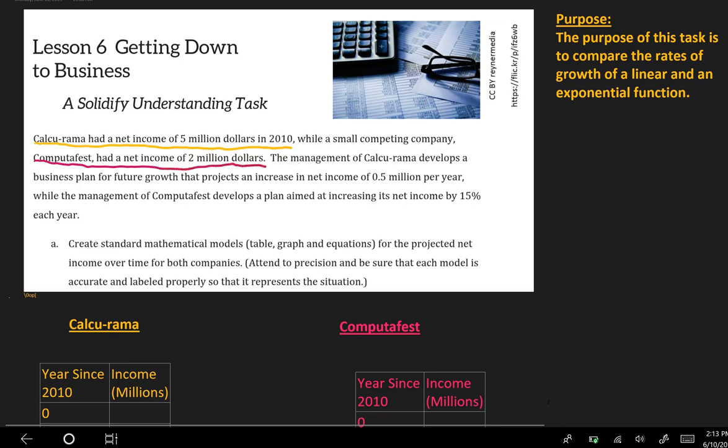The management of Calcurama develops a business plan for future growth that projects a net income of $0.5 million per year, while Computafest develops the plan aimed at increasing its income by 15%.